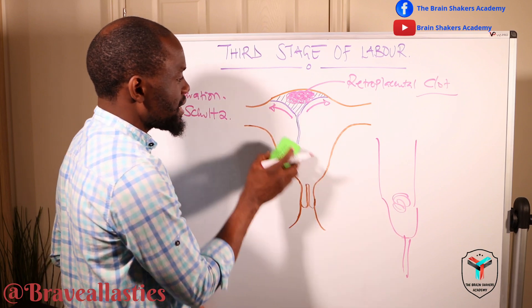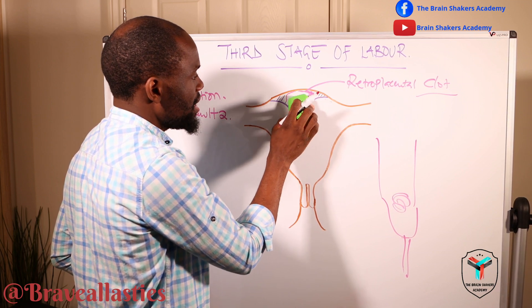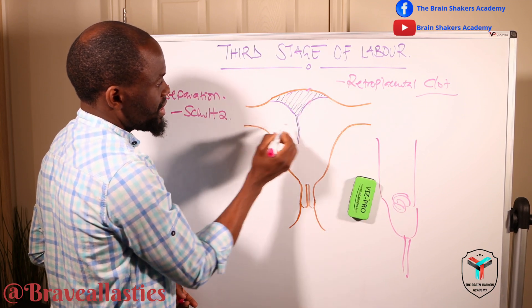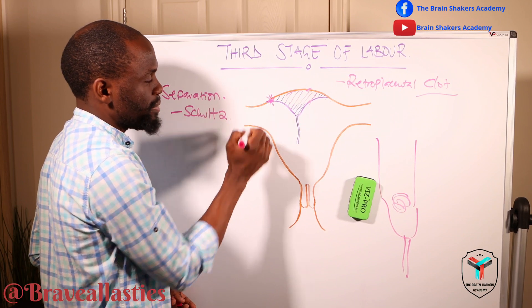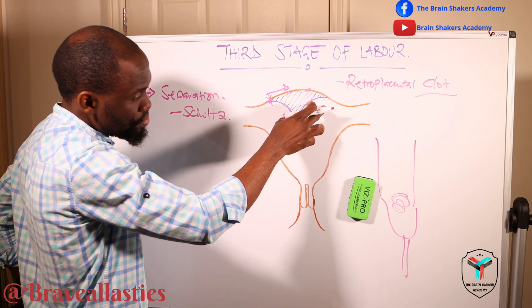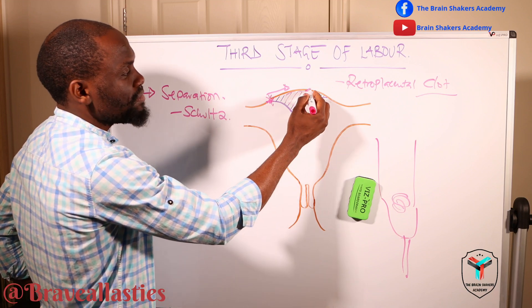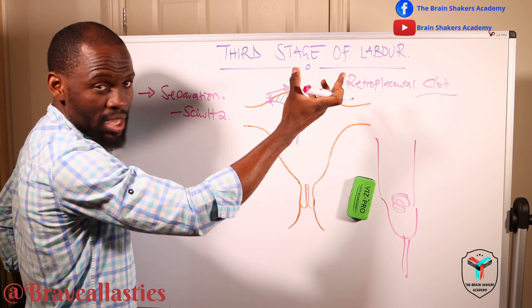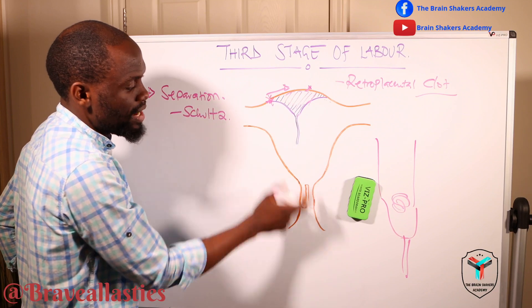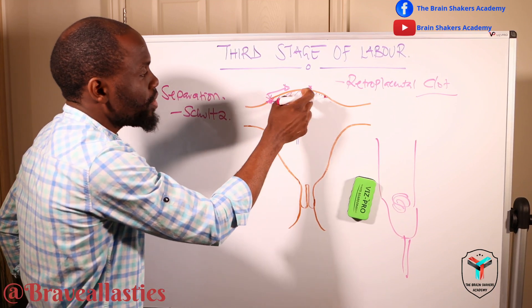There are also times when the placenta is going to start to separate from the edges, meaning that there is not going to be any retroplacental clot. There is just going to be separation of the placenta from the sides — separation will happen from the margins. This takes a little bit longer for the placenta to completely separate, and the chances of continuous bleeding are very high, because you will still have part of the placenta attached to the decidua while the ruptured vessels continue bleeding, giving you more revealed blood. Whereas with the Schultze method, you have more concealed blood as there is a clot.